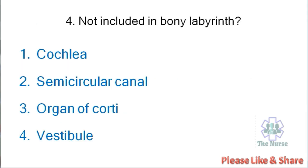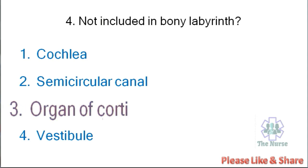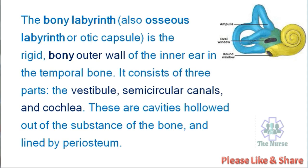Next question: Not included in bony labyrinth — cochlea, semicircular canal, organ of Corti, or vestibule? Correct answer is organ of Corti. The bony labyrinth, also called the osseous labyrinth or otic capsule, is the rigid bony outer wall of the inner ear in the temporal bone. It consists of three parts: vestibule, semicircular canal, and cochlea. These are cavities hollowed out of the substance of the bone and lined by periosteum.